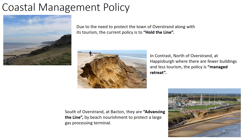Along each stretch of the coast in the UK, local councils form a coastal management policy known as a Shoreline Management Plan. Due to the need to protect the town of Overstrand and its tourism, the current policy here is to hold the line. In contrast, north of Overstrand at Happisburgh, where there are fewer buildings and less tourism, the policy is managed retreat.